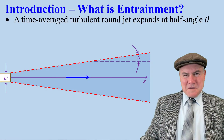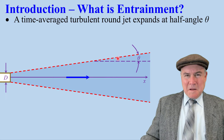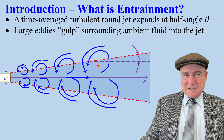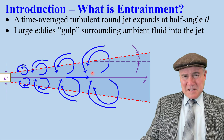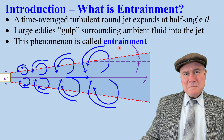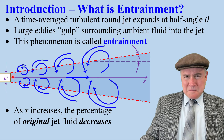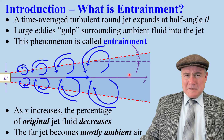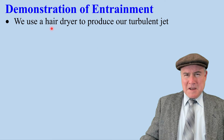What is entrainment? I'll use a round turbulent jet to illustrate. In a long time average, the jet expands at half angle theta, but there are large turbulent eddies that gulp air from the ambient fluid and bring them into the jet. That's what we call entrainment. Because we're adding ambient air, as you move downwind in the jet, the percentage of the original fluid decreases. By the time you get far away, the air moving in the jet is mostly ambient fluid. I'll demonstrate this with a hair dryer.